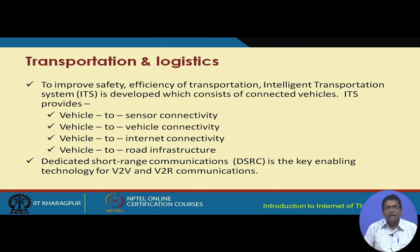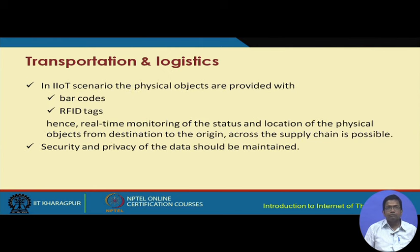There are different types of connectivities required in ITS. There is short-range communication in the form of DSRC that enables vehicle-to-vehicle and vehicle-to-road infrastructure communication — also known as V2V and V2I. DSRC is a very important key enabling technology for achieving vehicle-to-vehicle and vehicle-to-roadside infrastructure communication. In an IIoT scenario, physical objects are provided with barcodes and RFID tags for real-time monitoring.